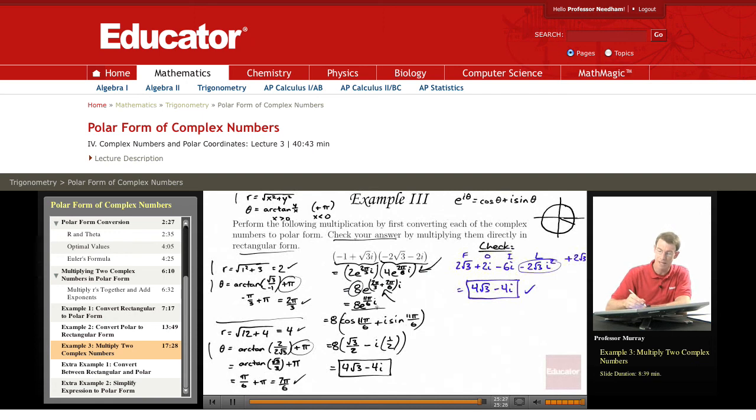We got a simplified polar form, and then we converted back into rectangular form using e to the i theta equals cos theta plus i sine theta. You could also use x equals r cosine theta, y equals r sine theta. You'll get to exactly the same place. I know my cosine and sine of 11 pi over 6, that's a common value, and so I get the answer there.